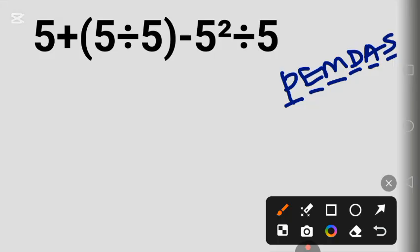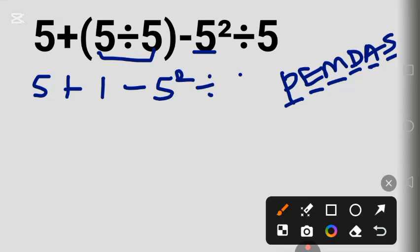Parentheses: 5 divided by 5. We begin here. 5 plus, 5 divided by 5 is 1, minus, we bring down this 5 squared, divided by 5. Exponent: 5 squared will be 25. So let's bring these ones down: 5 plus 1 minus 5 squared, which is 25, divided by 5.